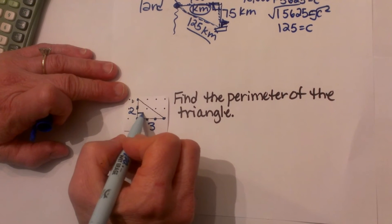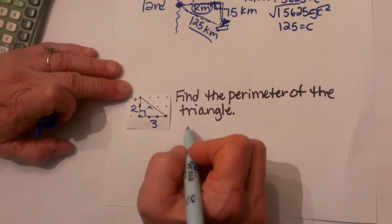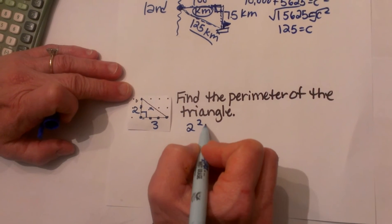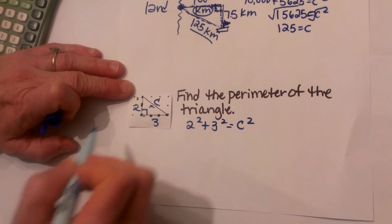Well, the third side is the hypotenuse of the right triangle. So let's take 2² + 3² and solve for the hypotenuse or solve for c.